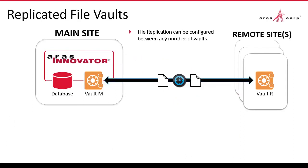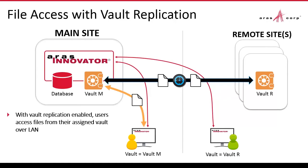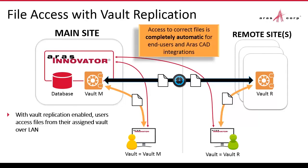ARIS provides file replication capability which can be configured between any number of vaults at any number of remote sites. Replication transactions can execute either immediately, based on a schedule, or when a defined method is executed. Files can be copied or moved at any time, and unique identifiers are used at the file level for tracking each file and each file version. With vault replication enabled, users simply access their files from the assigned vault over the local area network, providing quick access to files at all times.